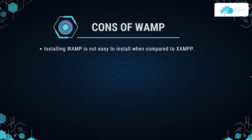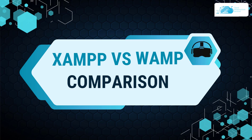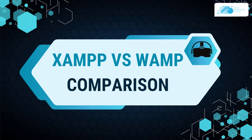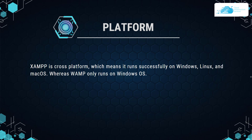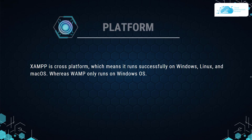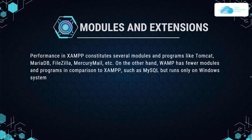Now that we're familiar with both XAMPP and WAMP and their pros and cons, let's talk about the comparison. First, regarding platform: XAMPP is a cross-platform software that runs on Windows, Linux, and macOS, whereas WAMP only runs on Windows. For modules and extensions, XAMPP constitutes several modules and programs like Tomcat, MariaDB, FileZilla, Mercury Mail, etc.